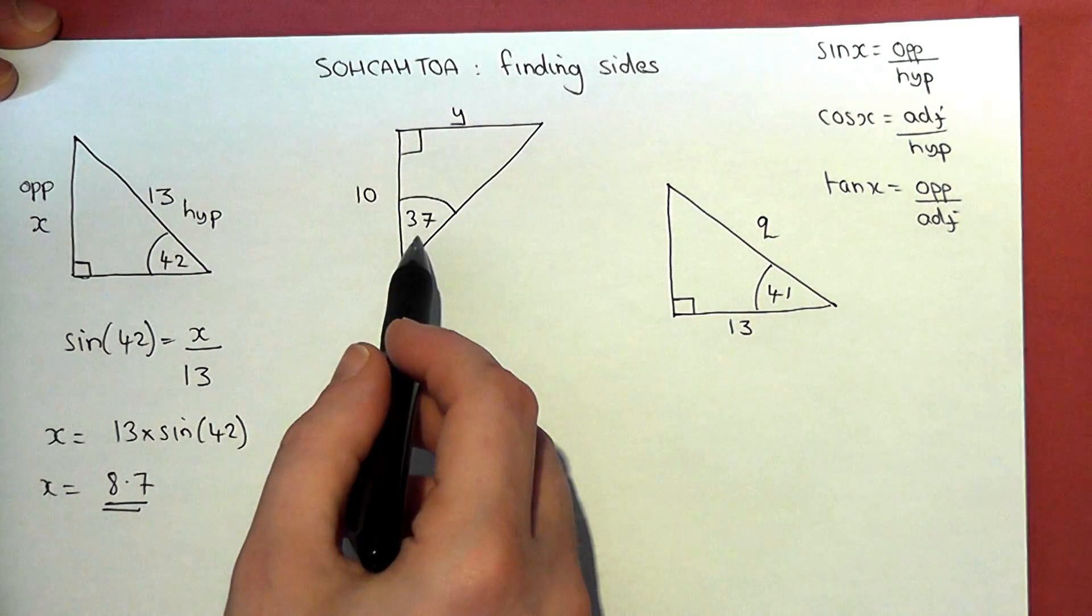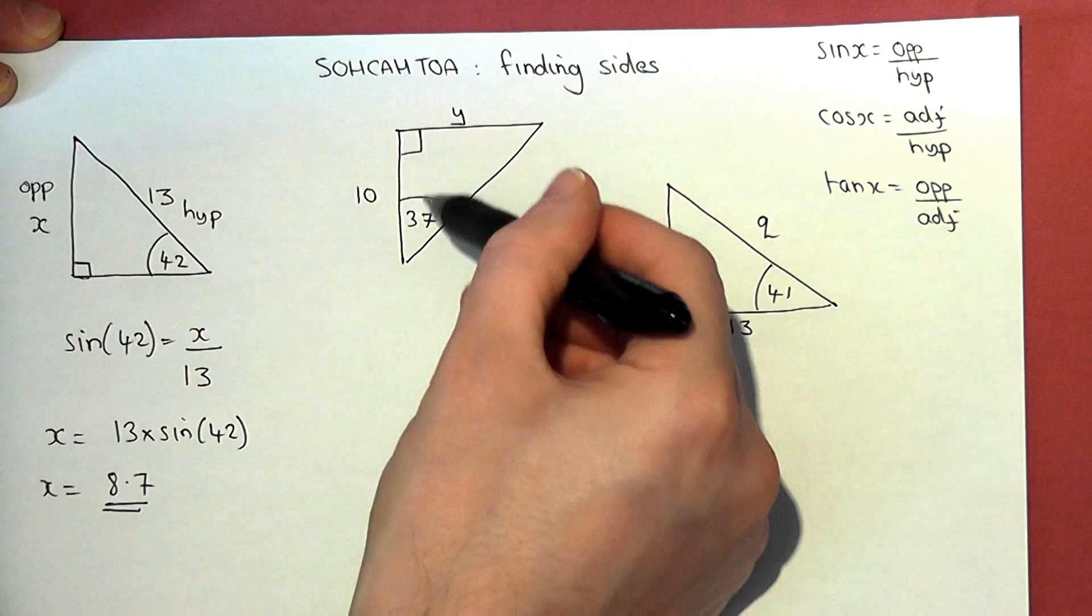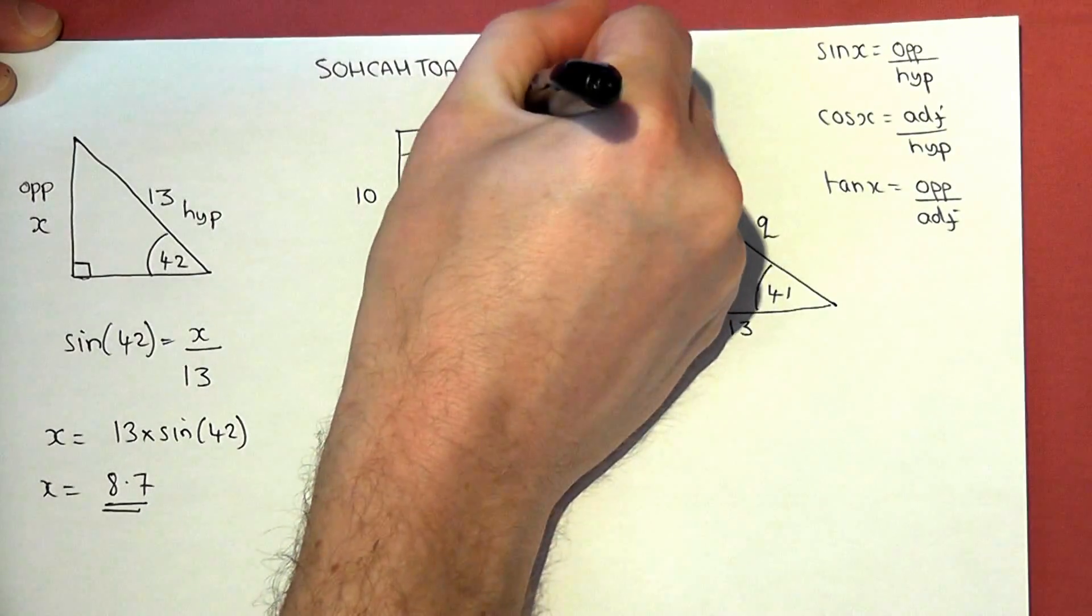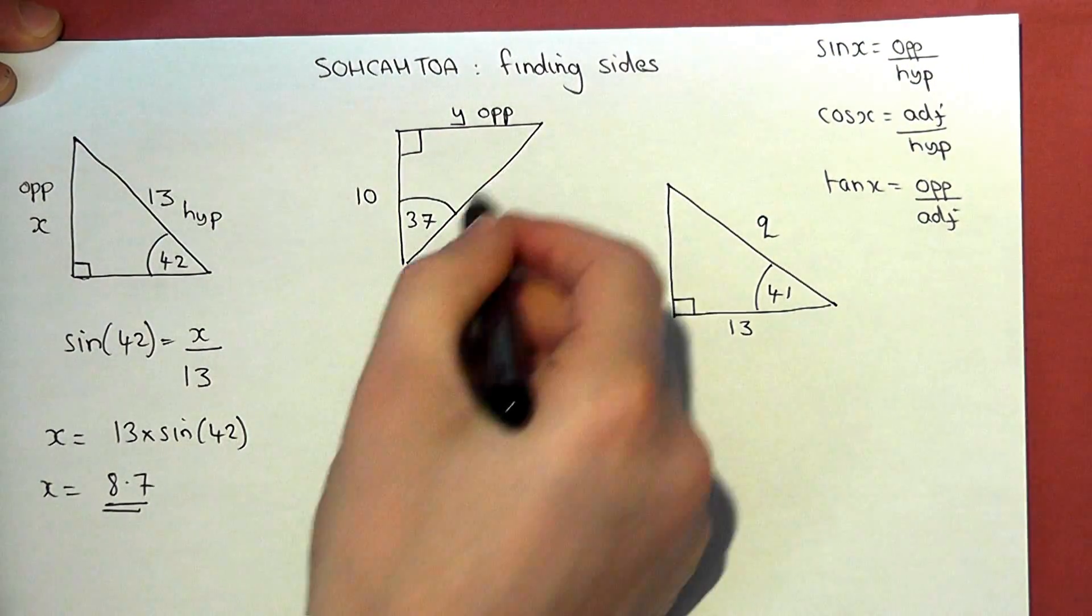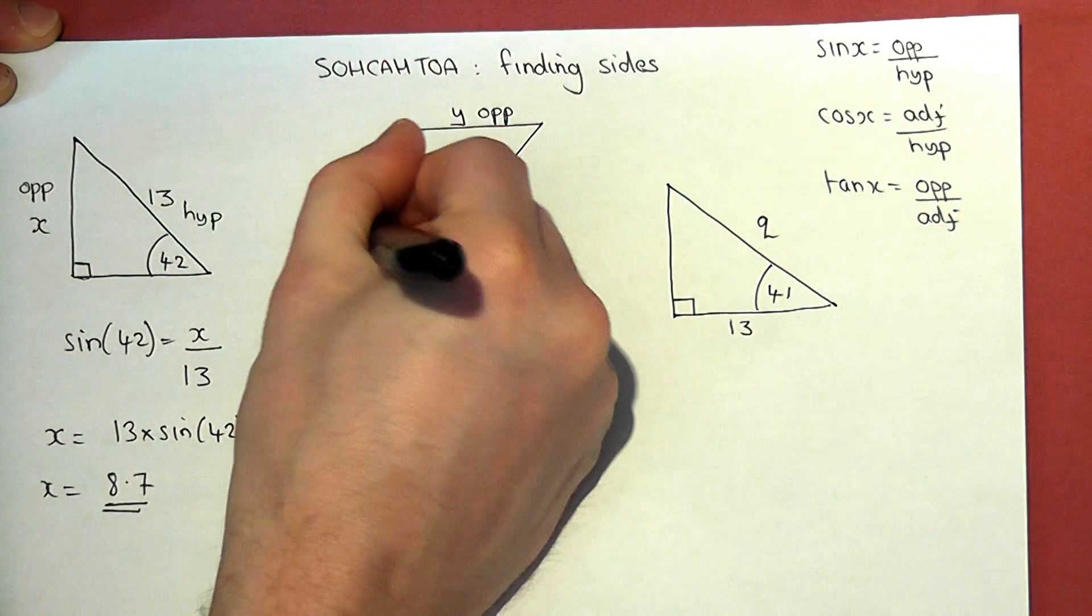OK, the second one. We have a known and an unknown. Now the unknown y is opposite the angle, so that's the opposite. Whereas the 10, it's not the hypotenuse, it is next to the angle, it is the adjacent.